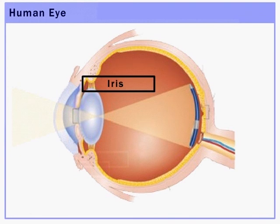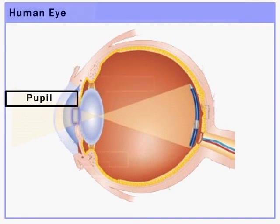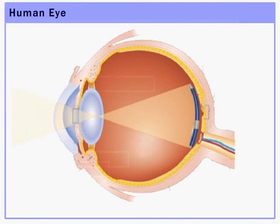A part behind the cornea is called the iris. It is a dark muscular diaphragm that controls the size of the pupil. The pupil regulates and controls the amount of light entering the eye.